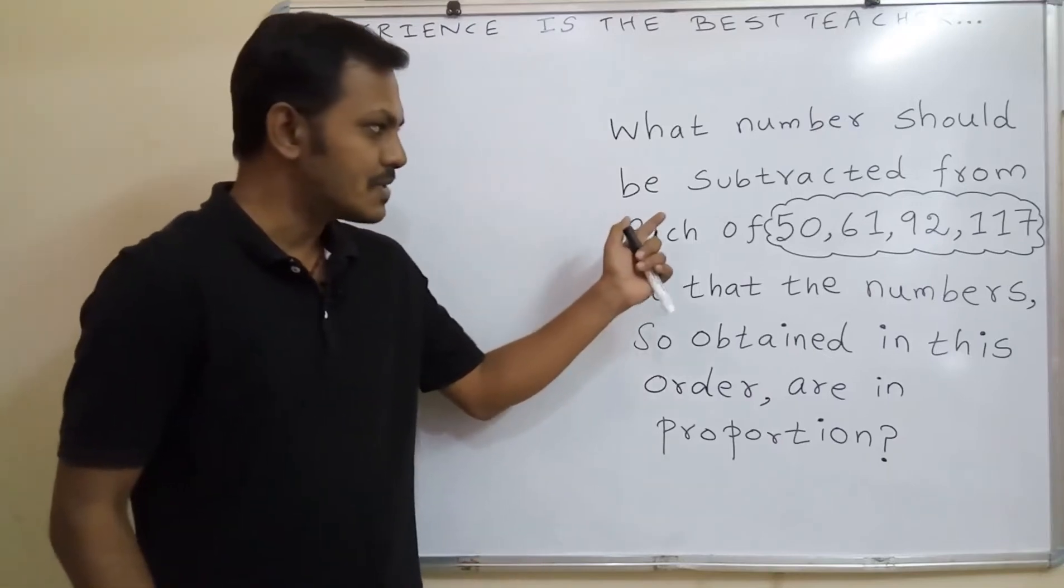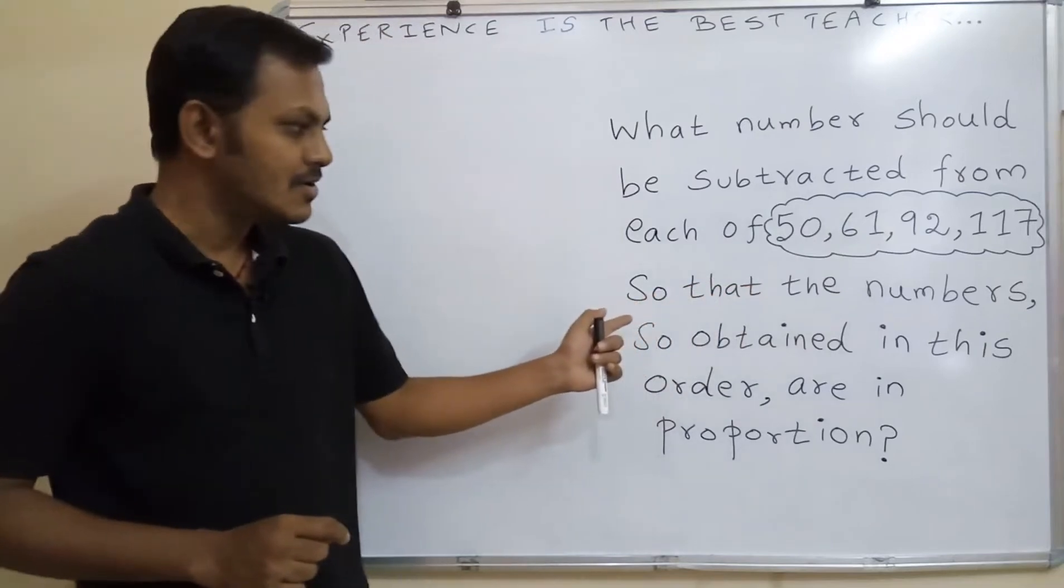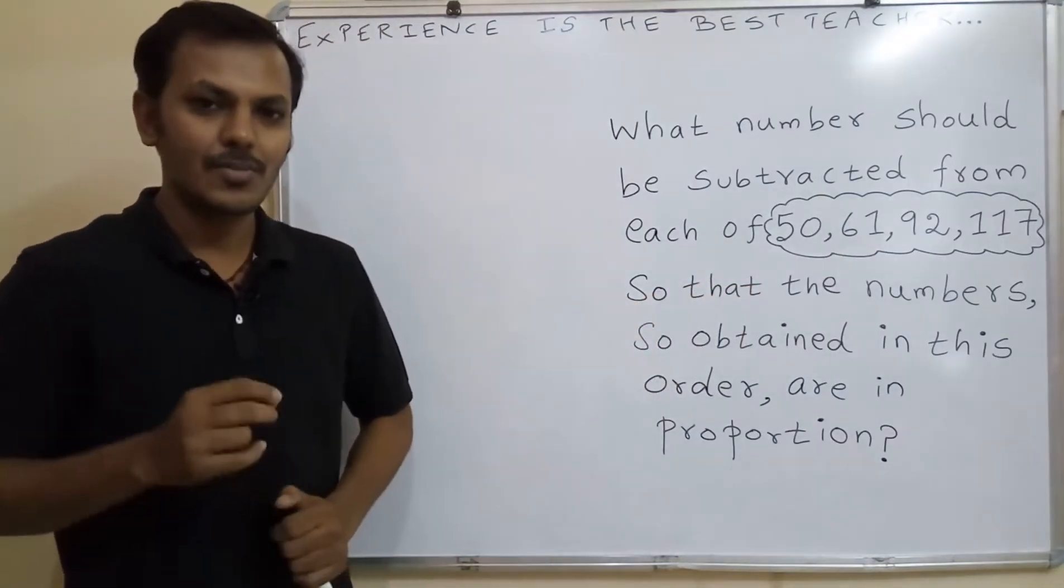See the question. What numbers would be subtracted from each of 50, 61, 92 and 117 so that the numbers so obtained in this order are in proportion.